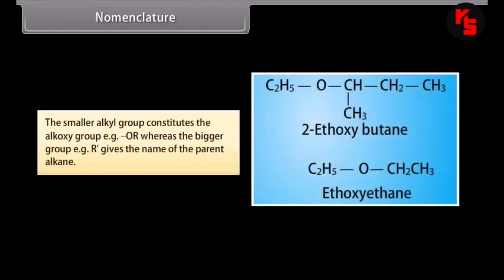According to the IUPAC system, ethers are named as alkoxyalkanes. The smaller alkyl group constitutes the alkoxy group (e.g., OR), whereas the bigger group (e.g., R') gives the name of the parent alkane.